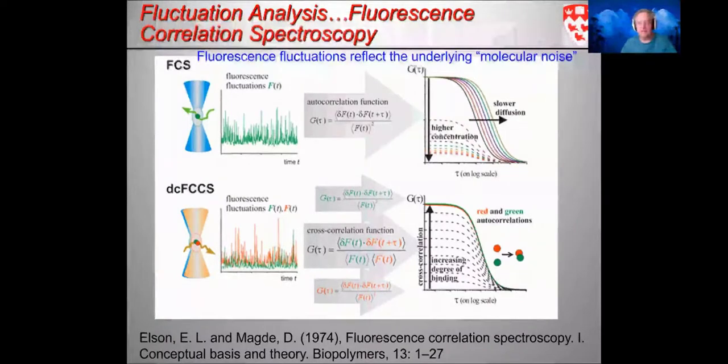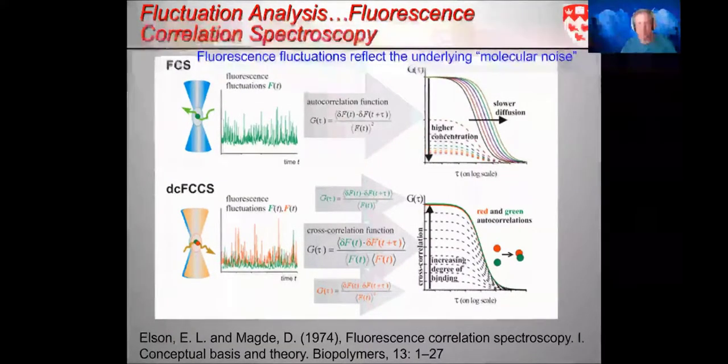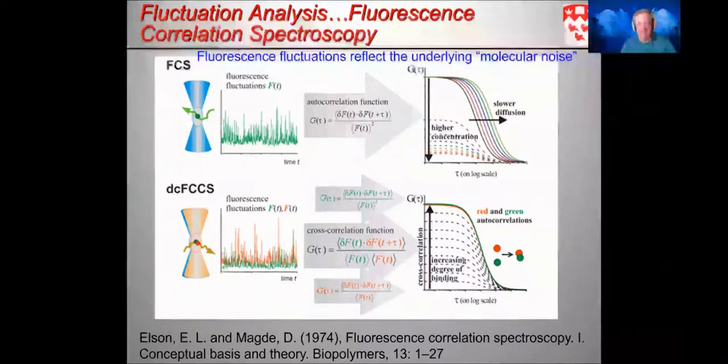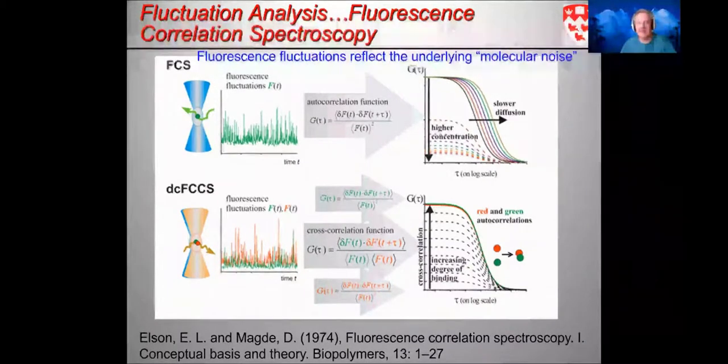First, the introduction or background. The image correlation techniques are built on what are generally known as fluorescence fluctuation methods. The original fluorescence fluctuation method was called fluorescence correlation spectroscopy, or FCS. It was developed in the early 1970s by Elliot Allison, Watt Webb, and Douglas Magdy at Cornell University.